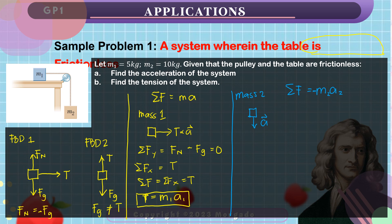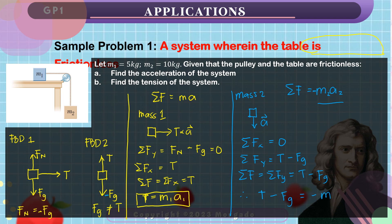The sum of forces along x for mass 2 is zero because there are no forces acting along x. In the vertical, the summation of forces depends on the gravitational force and tension force. The gravitational force is subtracted from tension because they are in opposite directions — Fg is downward, tension is upward. Since the net force is dependent only on the y-direction, the net force equals the summation of forces along y, which is tension minus Fg, and that equals negative mass 2 times acceleration of mass 2.